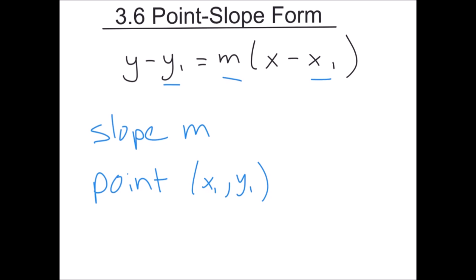This is our last form of the equation of a line — point-slope form. It's a little less common than y equals mx plus b, but slope-intercept form requires a y-intercept, which is a very specific point. Point-slope form only requires any generic point (x1, y1) and the slope m. The formula is: y minus y1 equals m times (x minus x1).